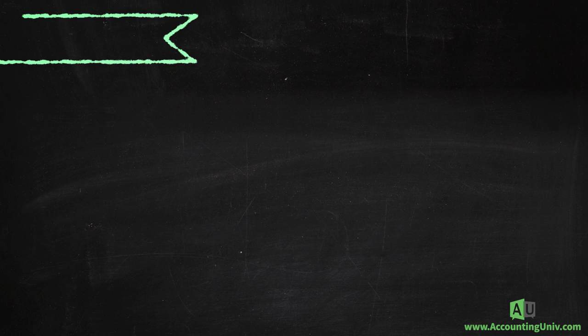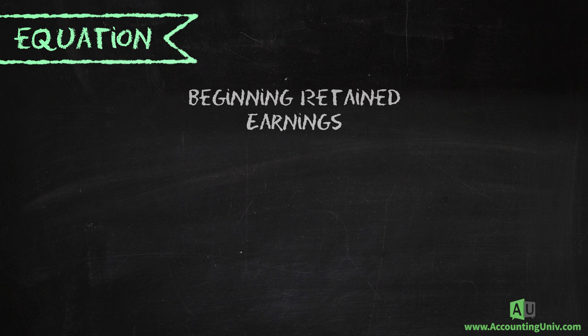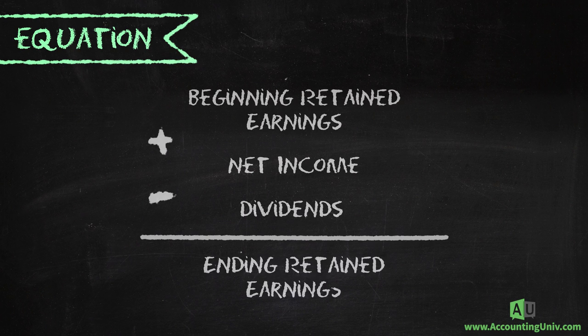So how do we calculate retained earnings? Here is the equation: beginning retained earnings plus net income minus dividends equals ending retained earnings. The ending retained earnings is the value that is reported on the balance sheet.